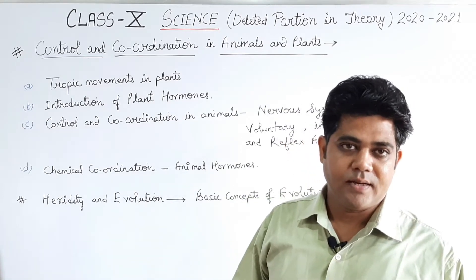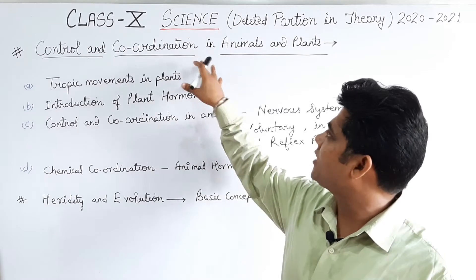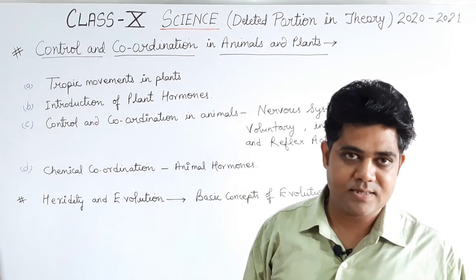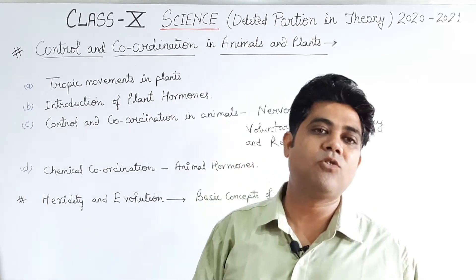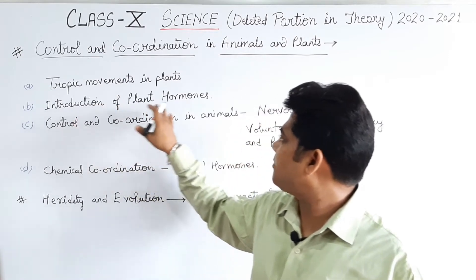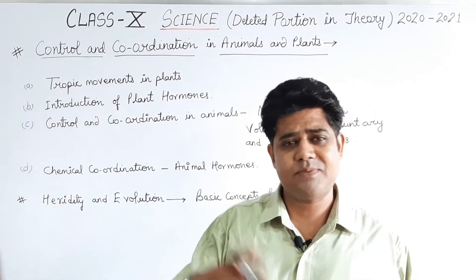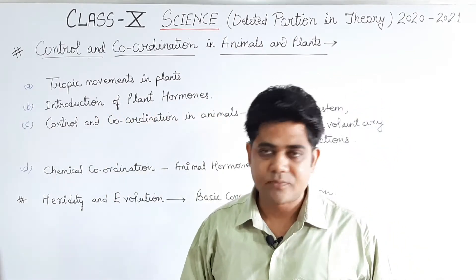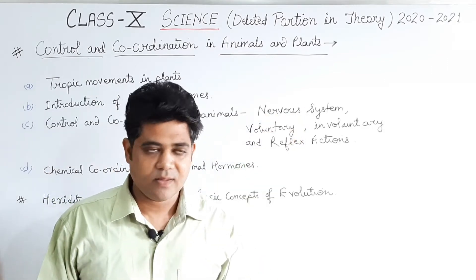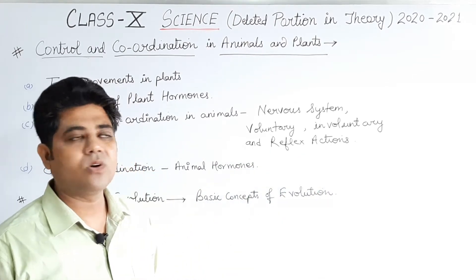In biology, the second chapter is Control and Coordination in Animals and Plants. The matter removed from this chapter includes tropic movements in plants — all tropic movements such as nastic movements and so on are not to be studied. Introduction of plant hormones is also deleted — auxins, gibberellins, cytokinin, and abscisic acid — these are not to be studied this session.